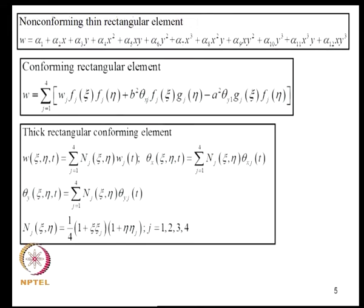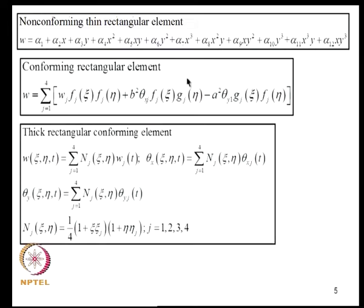This element was shown to be non-conforming because θY won't be continuous across element boundaries. By constructing shape functions as products of beam shape functions — cubic polynomials — we developed a conforming rectangular element. In this model, ∂²W/∂X∂Y must also be included as a degree of freedom; otherwise, ∂²W/∂X∂Y becomes zero at all nodes and as the element size shrinks, the plate would exhibit no twist.